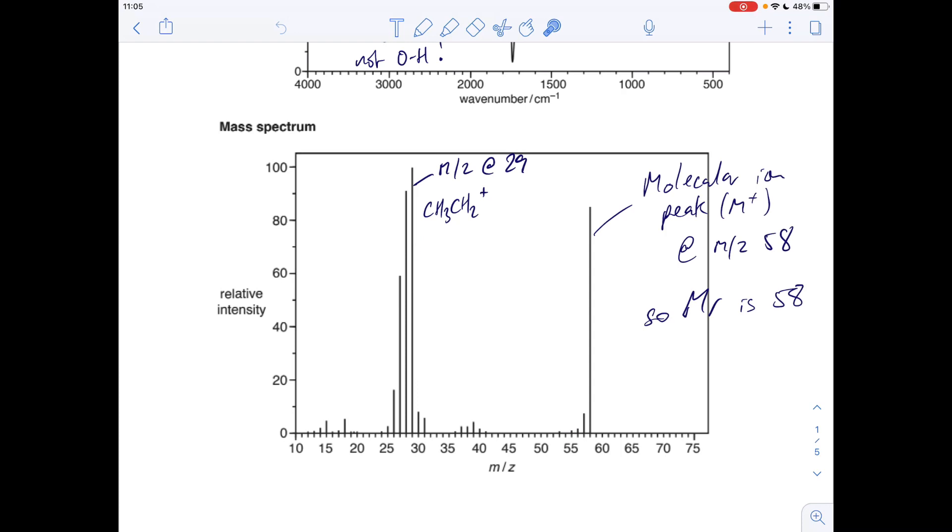So we've definitely got that there. So what we can say about our molecule is it's got an ethyl group. Just before we move on, just pick out this peak at 15, this fragment peak at M over Z 15, that's due to a methyl fragment CH3 plus. Obviously you're going to get that quite a lot because most organic molecules have got methyl groups.